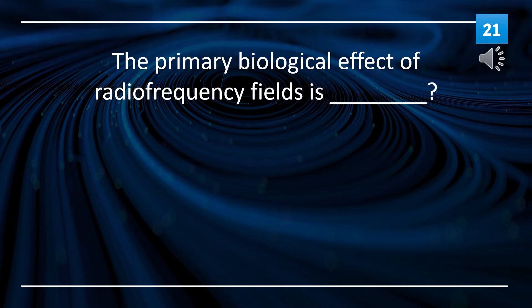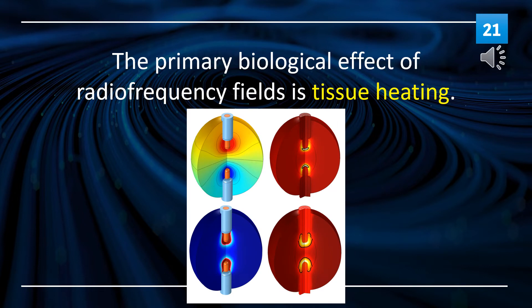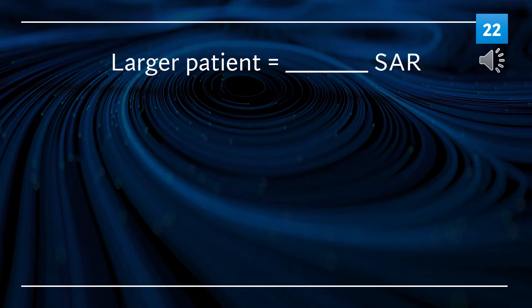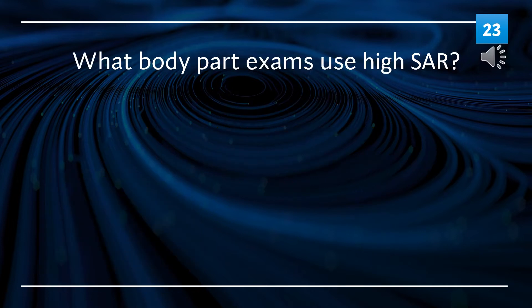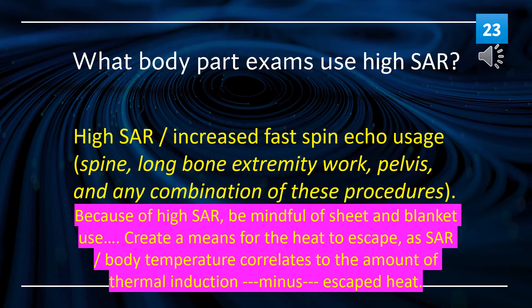The primary biological effect of radio frequency fields is tissue heating. A larger patient equals increased SAR. High SAR body part exams include fast spin echo usage in spine, long bone extremity work, pelvis, and any combination of these procedures. Be mindful of sheet and blanket use when scanning patients, as heat must have a way to escape, since SAR and body temperature correlate to the amount of thermal induction.